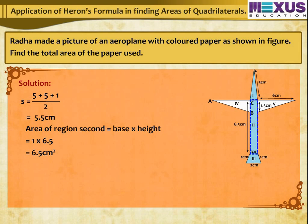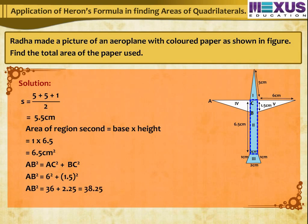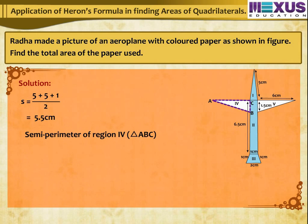Now apply Pythagoras theorem on triangle ABC. AB² = AC² + BC² = 6² + 1.5² = 38.25, therefore AB ≈ 6.2 cm. For area of region 4, the semi-perimeter = (6 + 1.5 + 6.2) ÷ 2 = 6.85 cm.